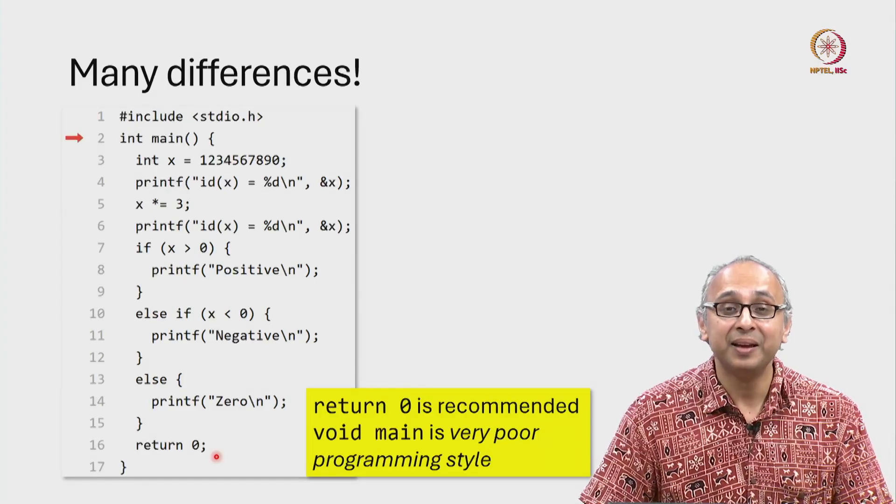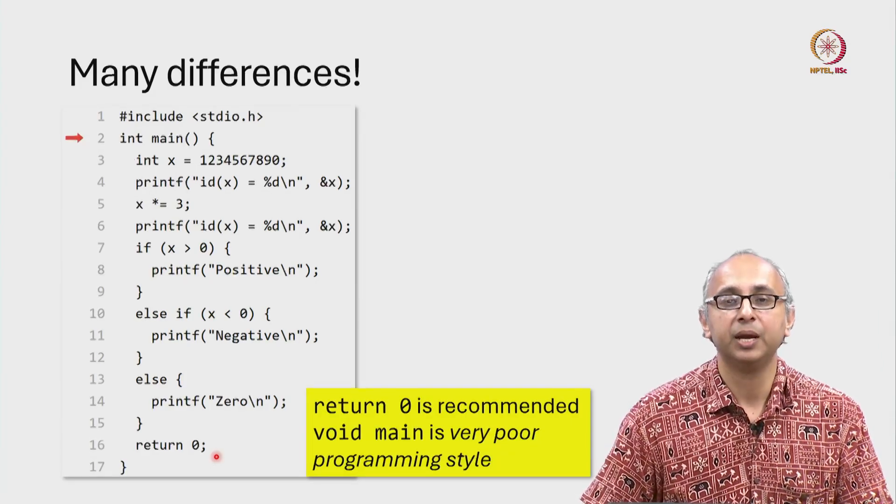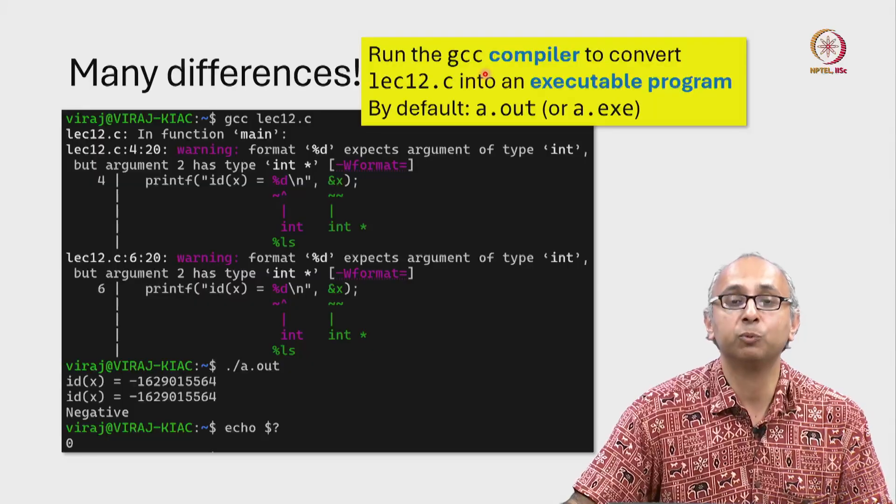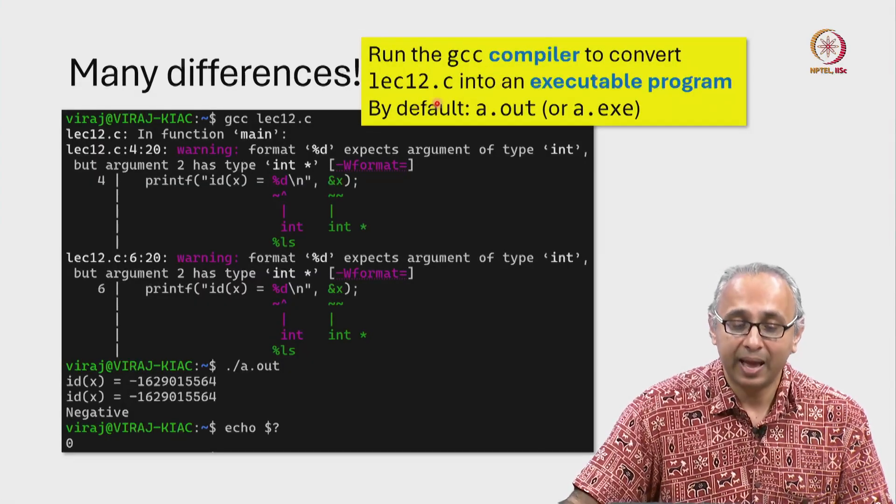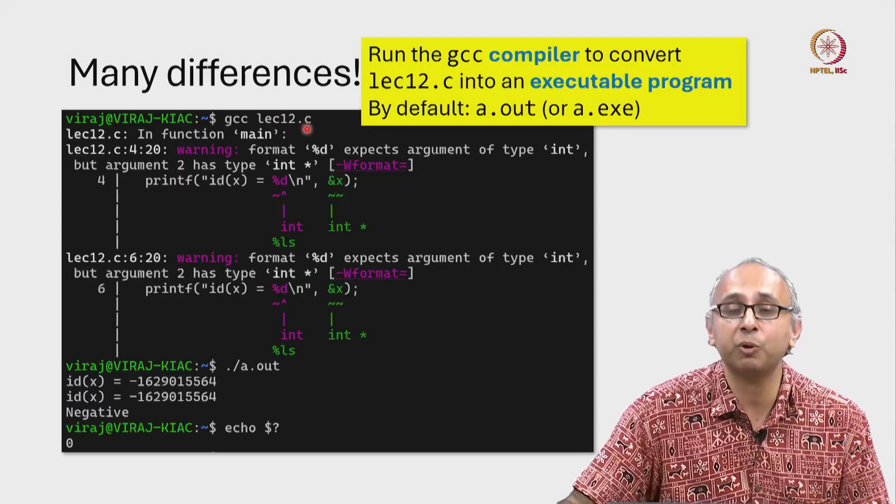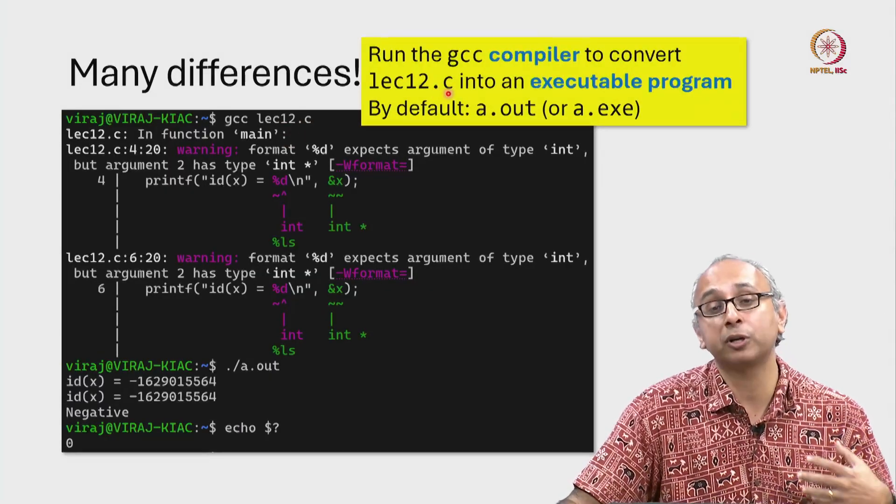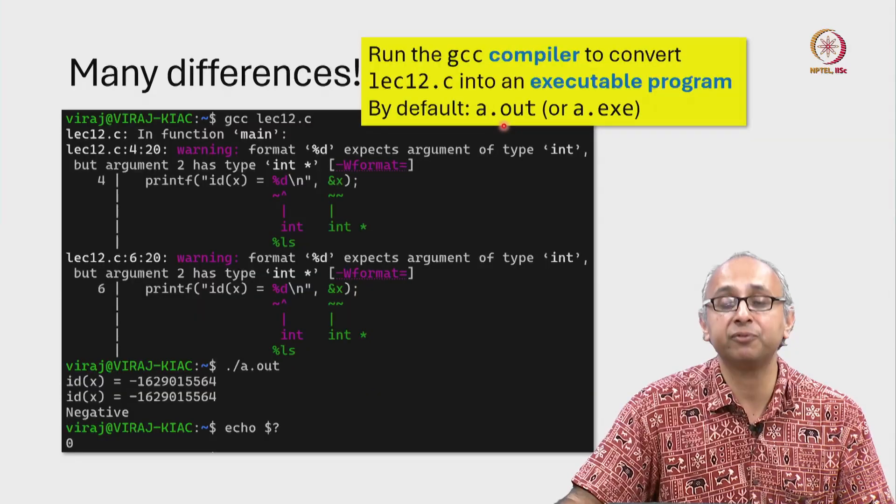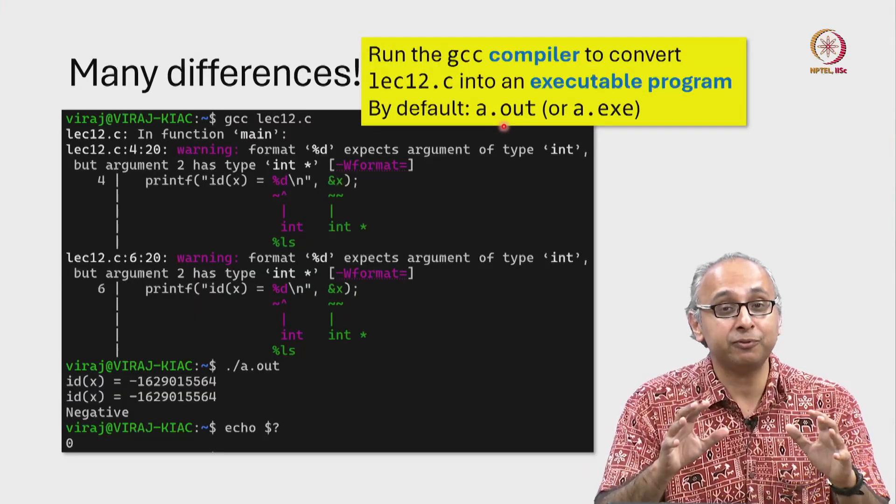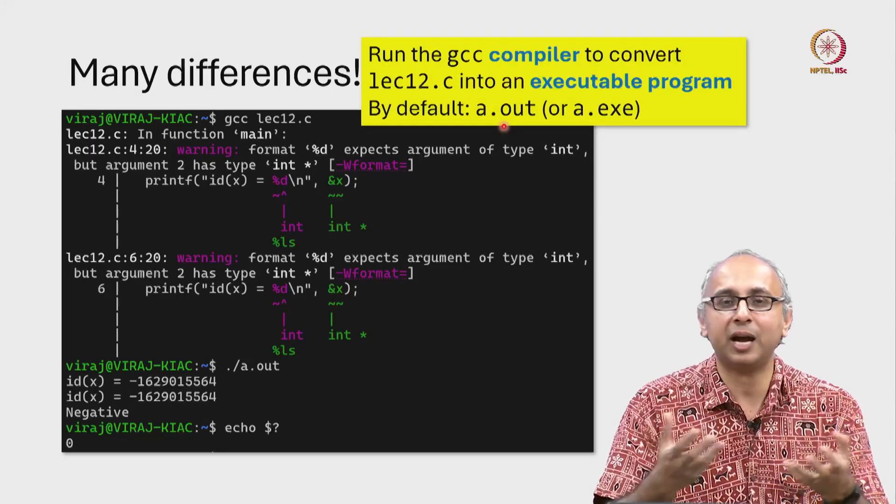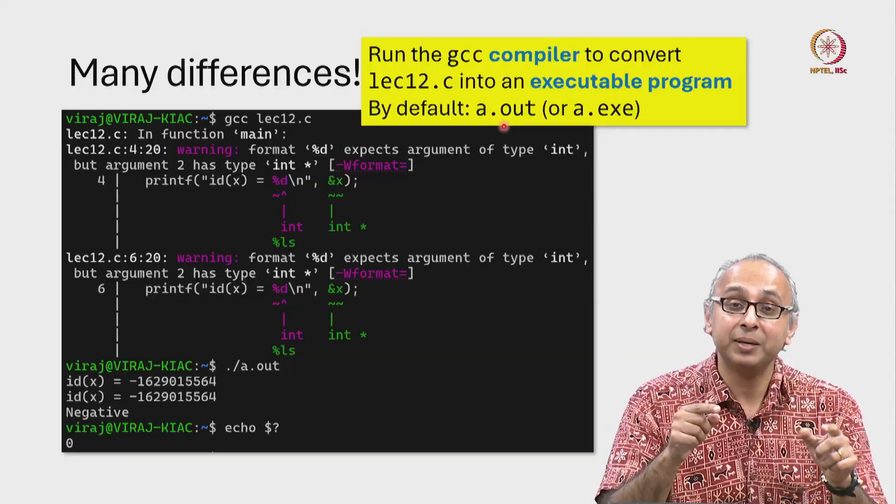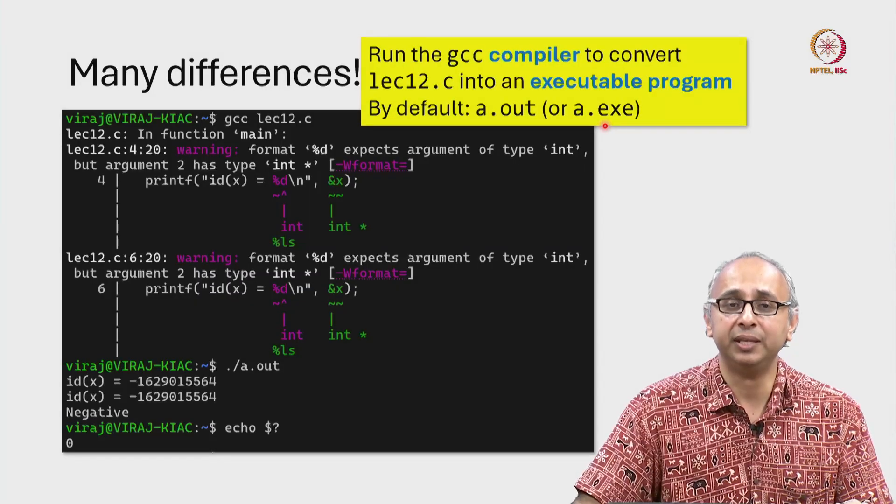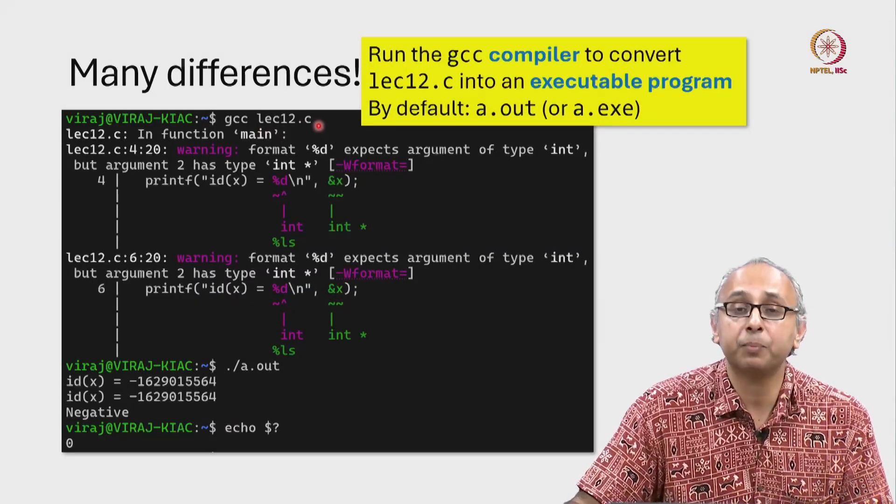Now let's actually try and compile and run this particular C program. So to compile this program, I am using a particular program called GCC which stands for the GNU-C compiler. And this particular compiler is taking this lecture12.c program and compiling it or converting it into an executable program. Now, by default on my Linux system, this produces a file called a.out. This particular file is machine code. If I try to read it, I will not succeed. I will not be able to understand it. But my computer can execute it. On a Windows machine, this file might be called something like a.exe. Now when I ran this particular compilation command, I got a whole bunch of scary looking messages.